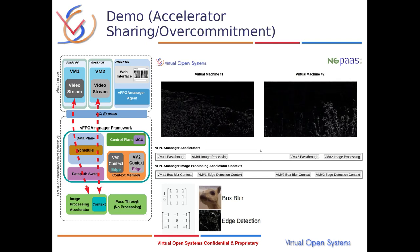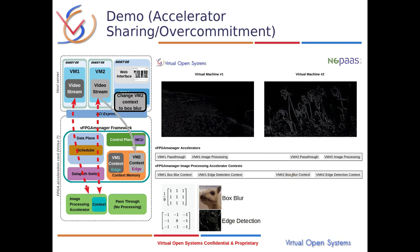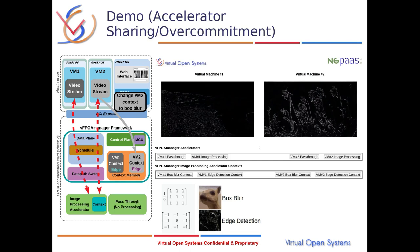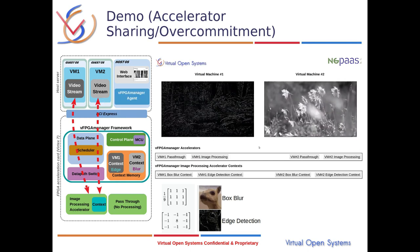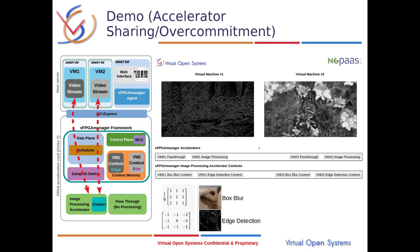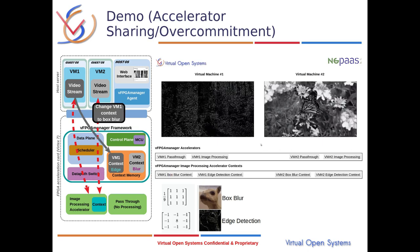Now both VMs share the same accelerator. The context of each VM dictates the type of processing done to the video. Now we can observe that while the accelerator is shared, the context with which each virtual machine processes the video gives different results. Please observe the changes to the contexts of the virtual machines and the impact on their video.